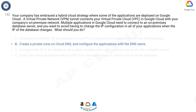The correct answer is B. Cloud DNS forwarding zones let you configure target name servers for specific private zones. Using a forwarding zone is one way to implement outbound DNS forwarding from your VPC network. A Cloud DNS forwarding zone is a special type of Cloud DNS private zone. Instead of creating records within the zone, you specify a set of forwarding targets. Each forwarding target is an IP address of a DNS server located in your VPC network or in an on-premises network connected to your VPC network by Cloud VPN or Cloud Interconnect.